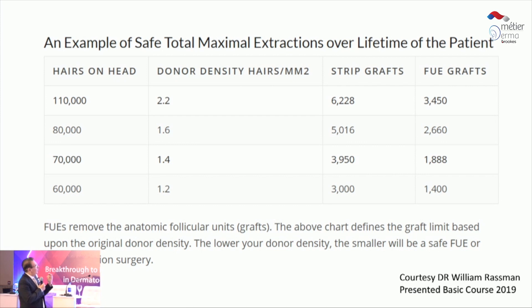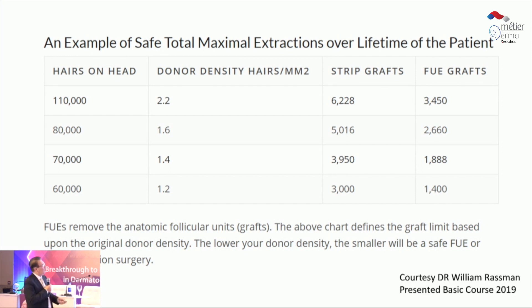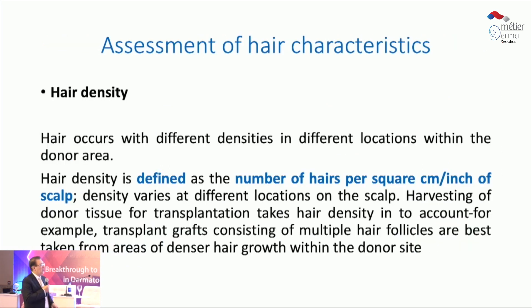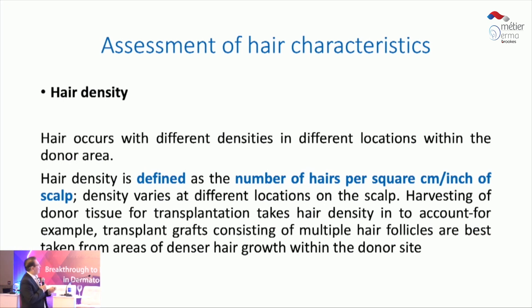When trying to extract grafts over a patient's lifetime, you have more to harvest from the strip than from FUE. So in my opinion, the strip method provides much greater lifetime yield. You need to assess density, and average density in this part of the world is about 80 to 85 grafts per square centimeter.